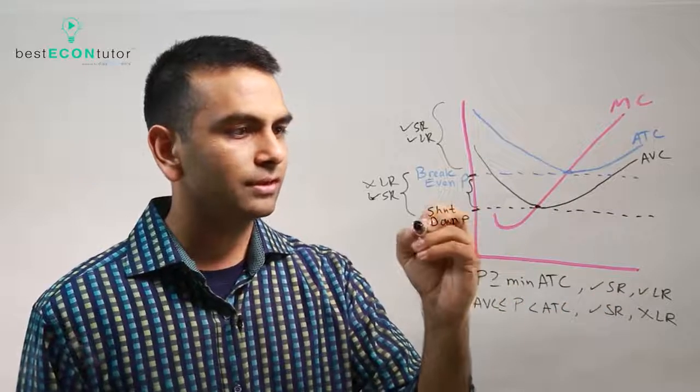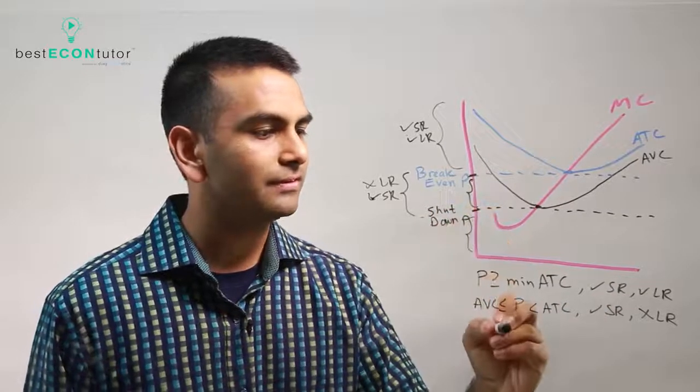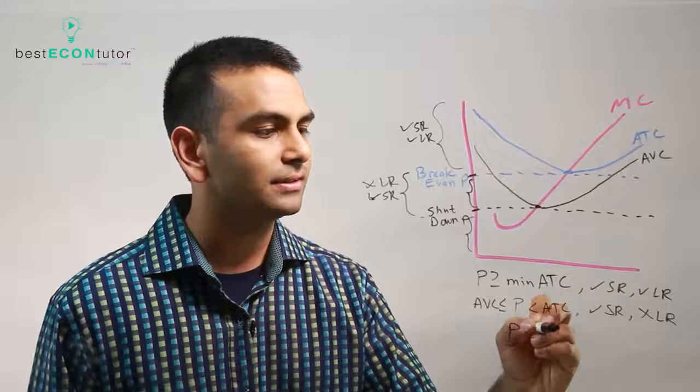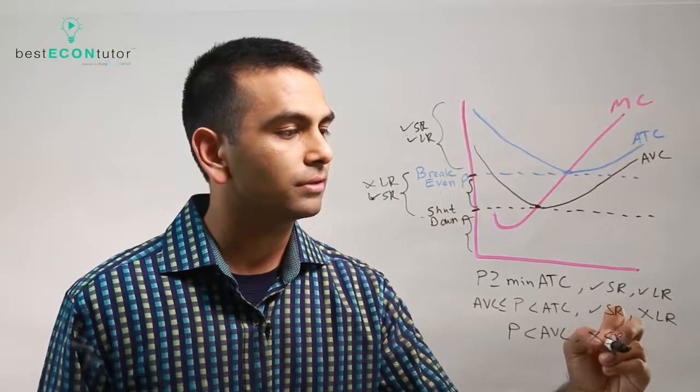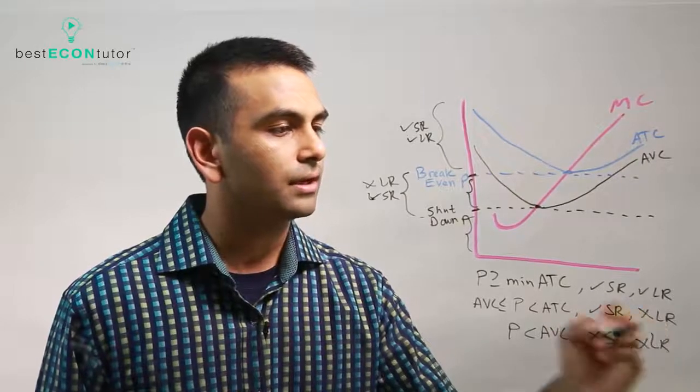And finally, if price was in this range, even less than the minimum of AVC, if P was less than the AVC, that minimum point, then you want to shut down immediately. Then you're closed in the short run and closed in the long run.